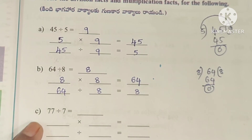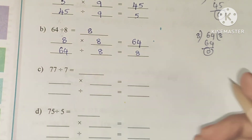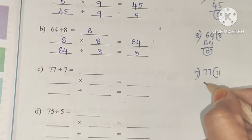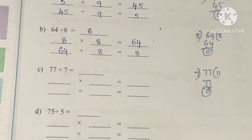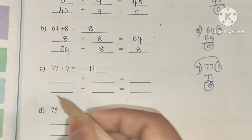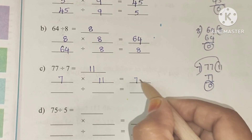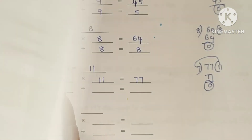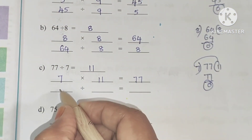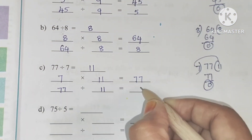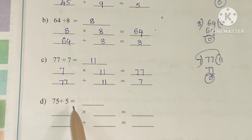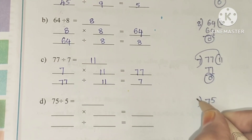C: 77 divided by 7. The answer will be 11. Multiplication fact: 7 into 11 equals 77. Interchanging: 77 divided by 11 equals 7.